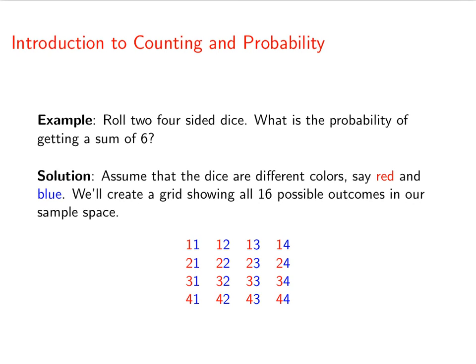All right, this is the grid that shows all possible outcomes. Now, it's probably important for us to make a distinction between rolling a 3-1 and a 1-3. Those are different outcomes because the 3-1 is with the red die having a 3, whereas the 1-3, the blue die has the 3.